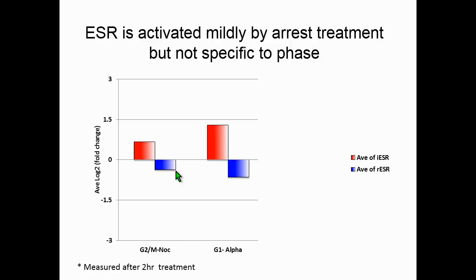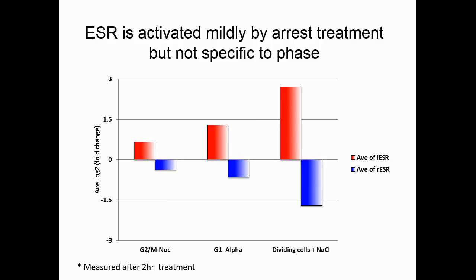I then measured their gene expression and compared it to synchronized cells. The first finding is that both arrested cells — at G1 and at G2/M phases — do have a mild ESR activation. This observation already disproves the cell cycle model, which proposes that the G1 phase is the major contributor to ESR activation. We also have other evidence to support this, but due to time limitations I won't go into full detail. The second finding is that if we compare to the truly real stress response, the magnitude in arrested cells is much more mild.